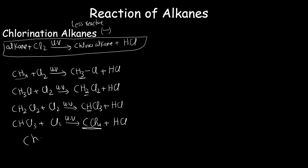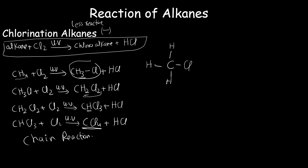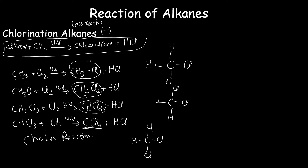This is called a chain reaction — also named a free radical reaction or substitution reaction for alkanes. We have a lot of products. For the structural formula of CH₃Cl: one carbon with three hydrogens and one chlorine — this is chloromethane. For CH₂Cl₂: one carbon with two hydrogens and two chlorines — this is dichloromethane. For CHCl₃: one carbon with one hydrogen and three chlorines. You can draw the structure of any of these compounds from the structural formula.